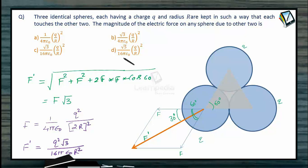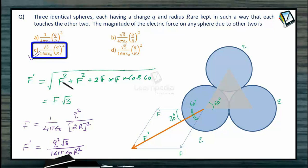Which one is the correct option to this question? I think option C will be the correct option: q square root 3 divided by 16 pi epsilon naught r square. So it is the same. Option C is the correct option to this question.